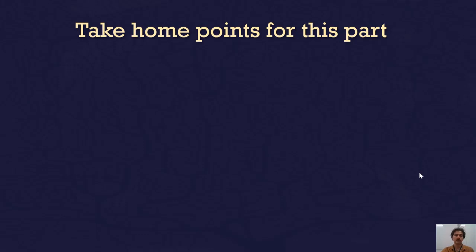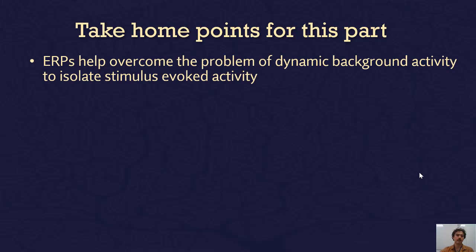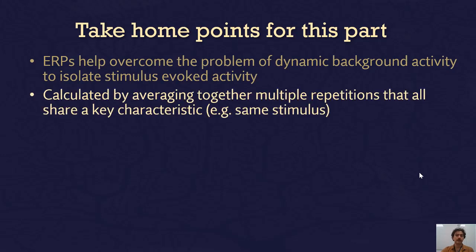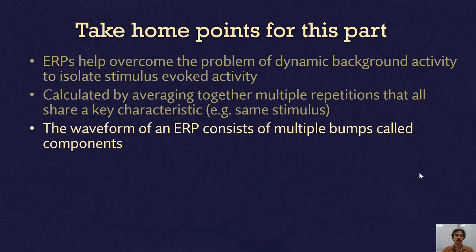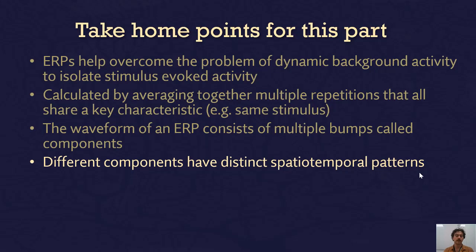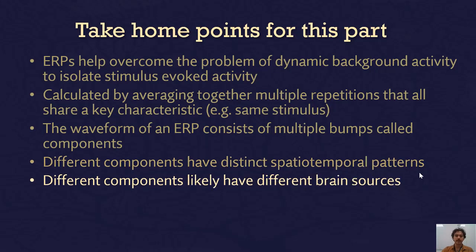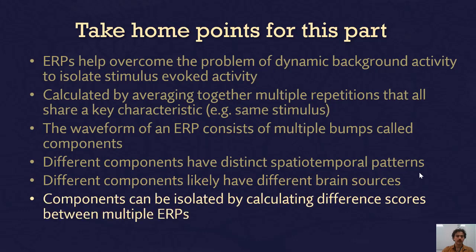Take-home points for part one: ERPs help overcome the problem of dynamic background activity to allow isolation of stimulus-evoked activity. They're calculated by averaging multiple repetitions sharing a key characteristic — for example the same stimulus or cognitive process. The ERP waveform consists of multiple bumps called components, likely generated by different neural generators. Different components have distinct spatiotemporal patterns, different brain sources, and can be isolated by calculating difference scores between ERPs from different behavioral conditions.